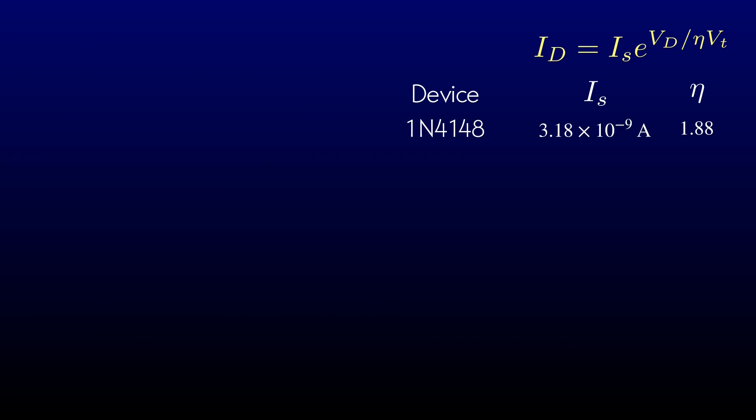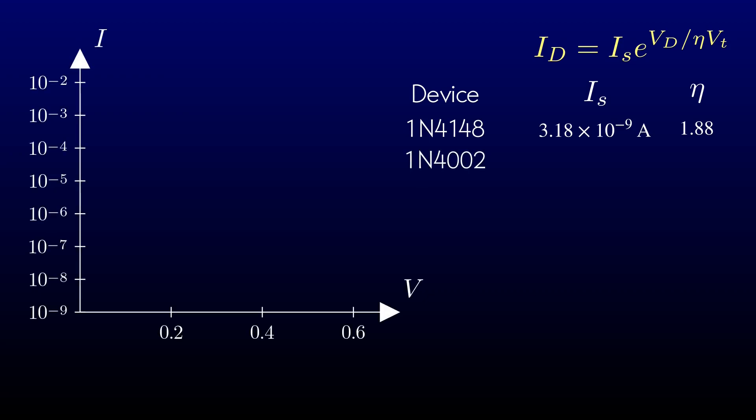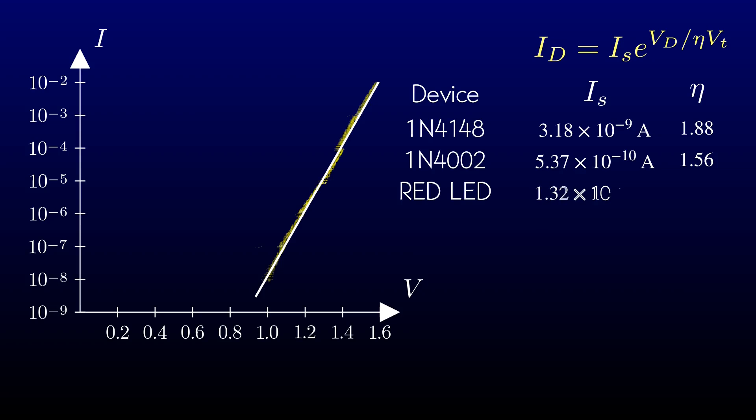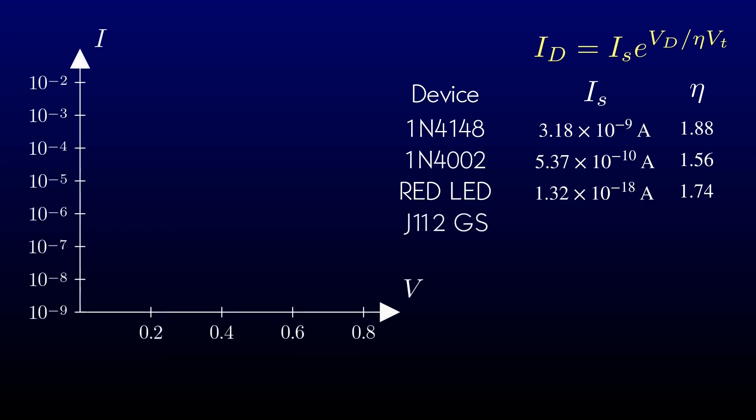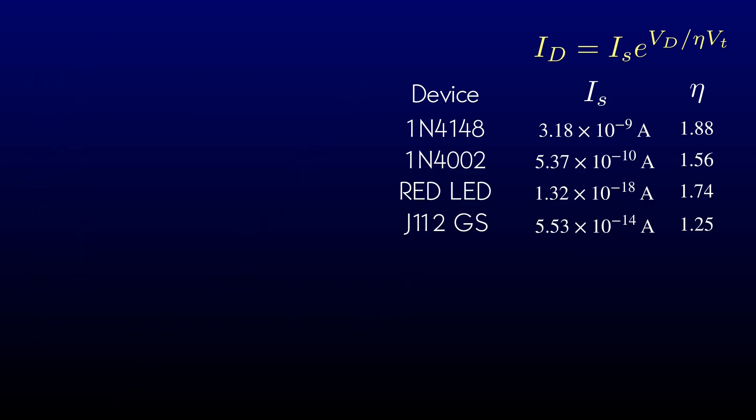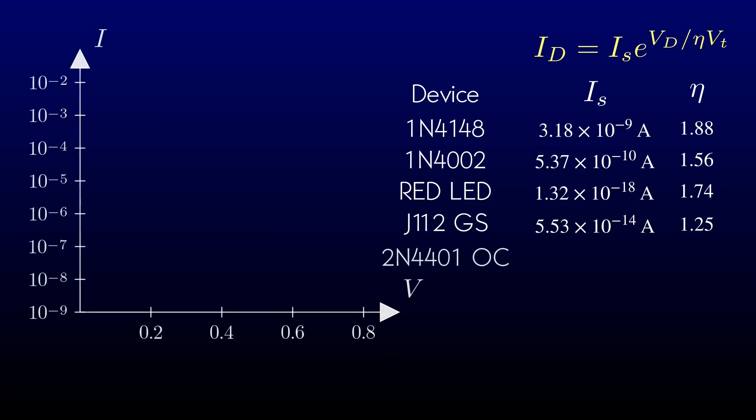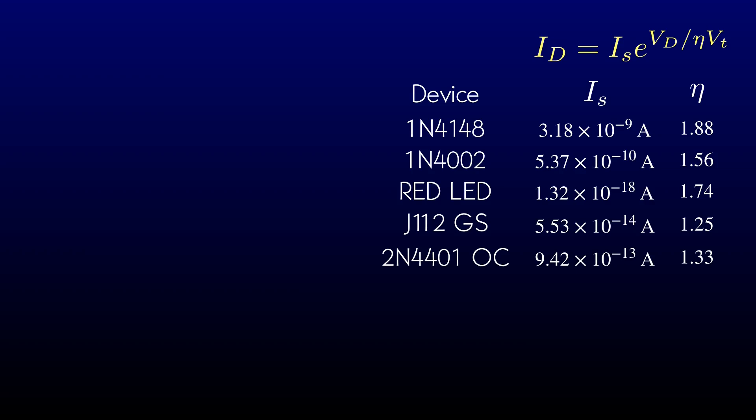And we can quickly fly through the other devices we tested. 1N4002, a red LED, the gate-to-source junction of a J112 JFET, and the base-emitter junction of a 2N4401 BJT with the collector lead disconnected. They all have ideality factors between 1 and 2, as we said before. The saturation currents vary wildly, as you can see. But they all yield about the right voltage drop for useful currents.